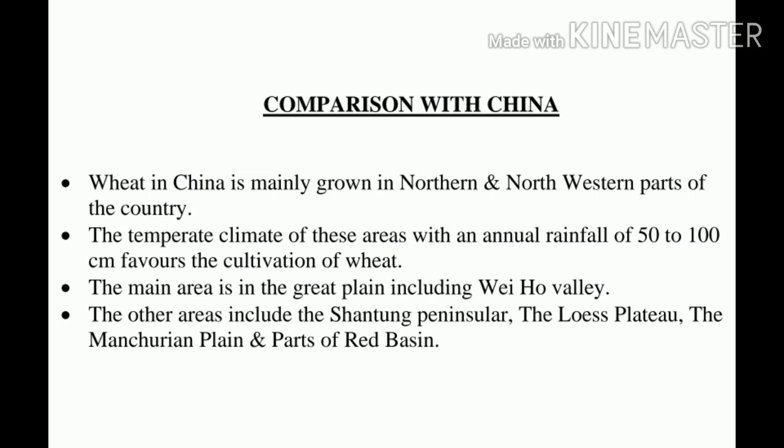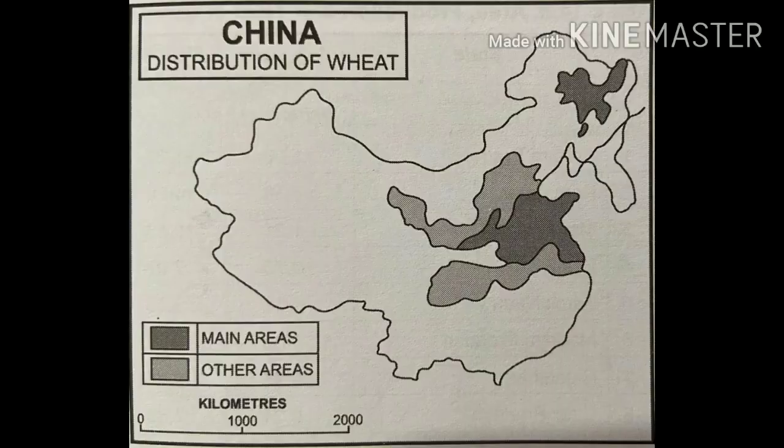Winter wheat is grown in the area south of the Great Wall, where seeds are sown in autumn and harvested in spring. In Manchuria and areas north of the Great Wall, wheat is sown in spring and harvested in summer, and hence called spring wheat. The Wei-He Basin has a longer growing season than Manchuria, as a result of which yields are much higher in the Wei-He Basin than the Manchurian Plain. Extensive use of irrigation is made to ensure high yields and to avoid crop failures. However, crop failures do occur in the Loess Plateau due to long winters and lack of irrigation facilities.